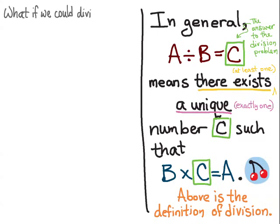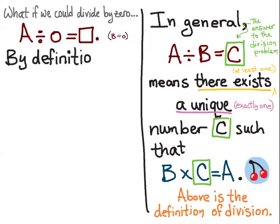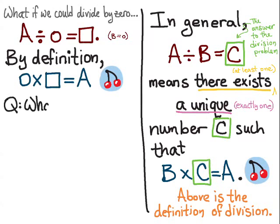So what if we could divide by zero? Then we would have something of the form A divided by zero equals box, and notice this is the same equation with B equals zero. So by our definition, zero times box equals A, that's the cherry equation with B equals zero, and the question we're trying to answer is what goes in the box.